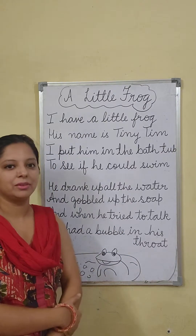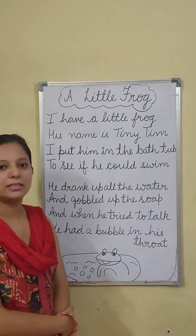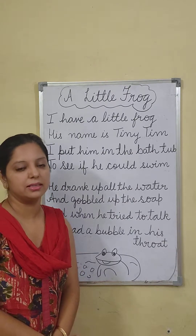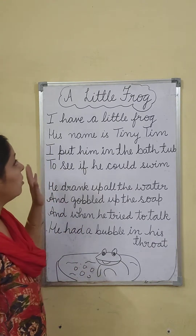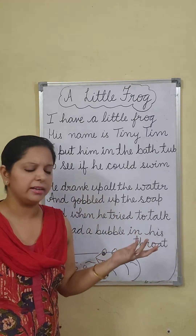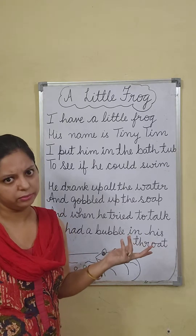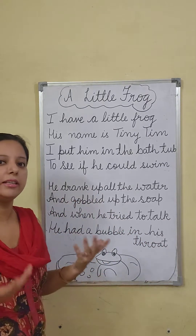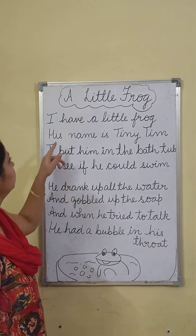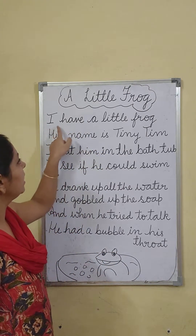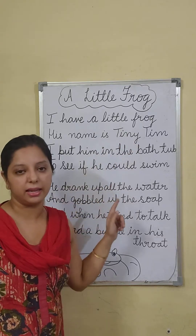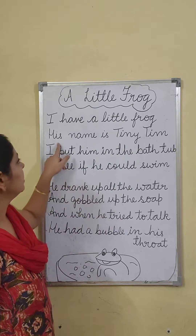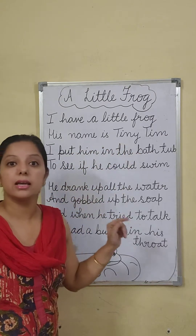This is a very cute poem, so let's discuss it now. I will explain it to you. The child is telling us — it may be a boy or a girl, nobody knows who has written it. So let any child be the speaker. The child is saying: I have a little frog — mere paas ek frog hai. His name is Tiny Tim — aur uska naam rakha hai Tiny Tim.